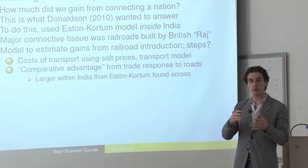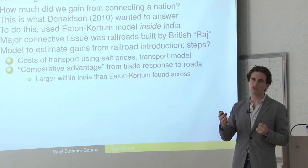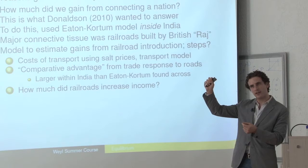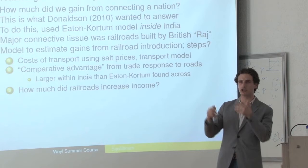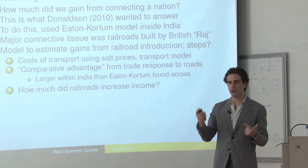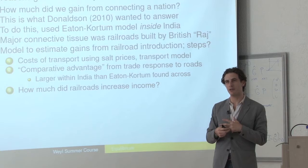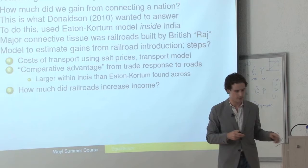He found the comparative advantage was much larger within India than across countries, suggesting a large fraction of gains from trade can be achieved within countries. Then he asked how much railroads increased income, looking at all places that had a railroad connection versus places that didn't. To make sure that wasn't endogenous — that they weren't just building railroads in more productive places — he looked at cases of railroads that were almost built but weren't, for administrative reasons like the British ending up not liking a particular place. He found that once you ran that as a control versus the treatment, there was really no effect of railroads on development in those areas.